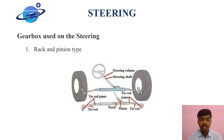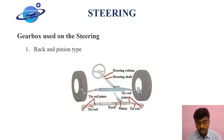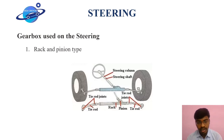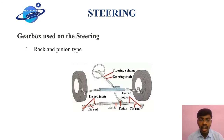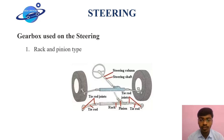The rack and pinion type steering uses a gear setup which converts the rotary motion of the steering wheel into a linear motion that causes the vehicle to turn. It also provides a gear reduction so that turning the wheels becomes easier. The pinion is directly connected to the steering shaft and the rack is connected to the front axle. In this type we get 100% output efficiency, making it the most widely used steering type in many cars.